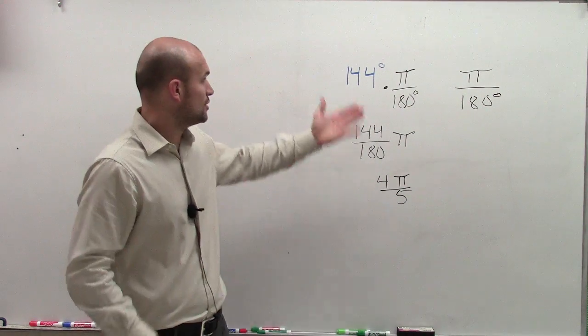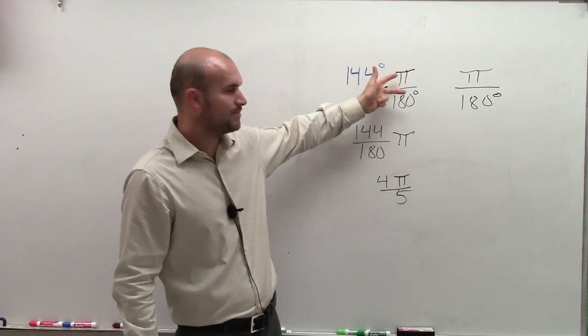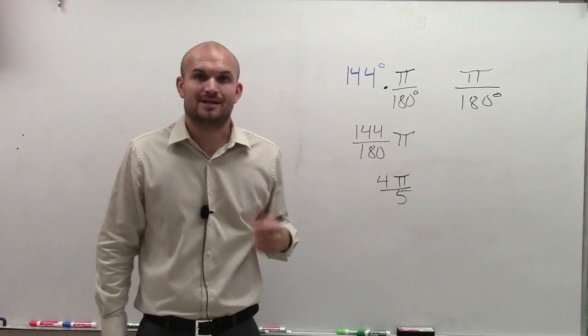So there you go. To go from degrees to radians, all you need to do is multiply by the ratio of pi over 180. Thanks, hope it helped.